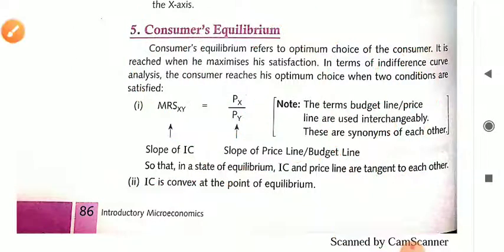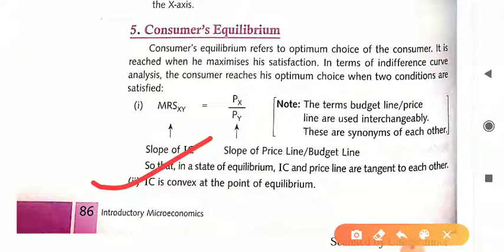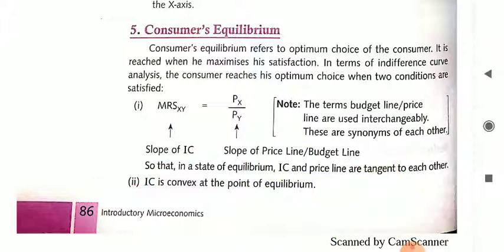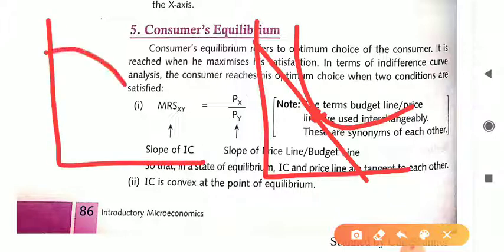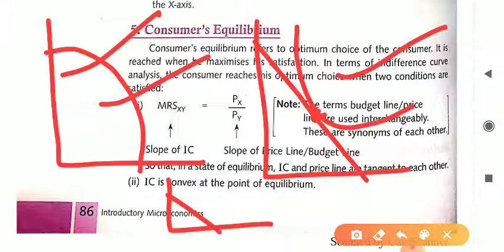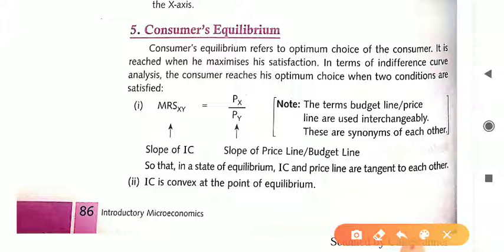But the second condition must also be fulfilled. Then only can we say the consumer is in equilibrium. The second condition is that the IC is convex to the point of equilibrium. At the point of equilibrium, the Indifference Curve should be convex in nature. As you all know, this curve is known as a concave curve and this curve is known as a convex curve. The Indifference Curve should always be in the shape of a convex curve, not in the shape of a concave curve or a straight line. We must fulfill these two conditions so that the consumer can reach the point of equilibrium.